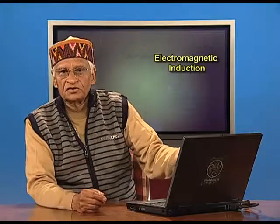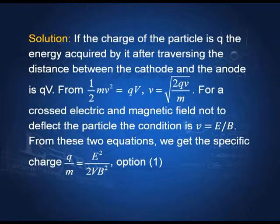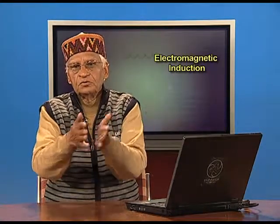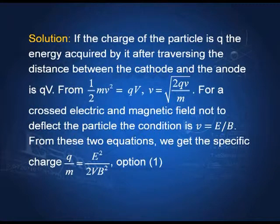For crossed electric and magnetic fields to not deflect the particle, the condition is v = E/B, since the magnetic force qvB and the electric force qE balance each other. From these two equations — v = E/B and v = √(2qV/m) — we can derive q/m, which turns out to be E²/2VB², which is option 1.